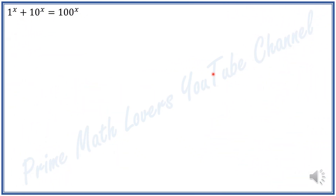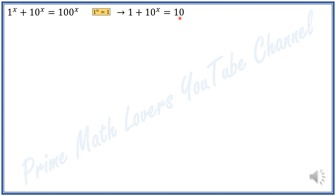When we look at the equation, we recognize that 1 raised to any power equals 1, allowing us to rewrite the equation as 1 plus 10 to the power of X is equal to 100 to the power of X.